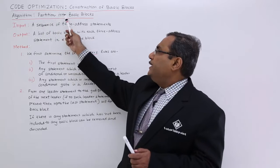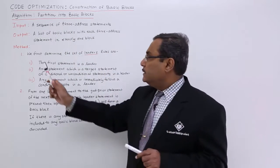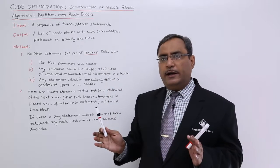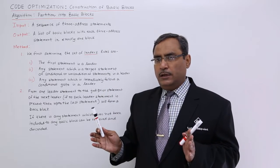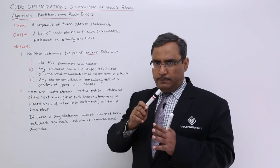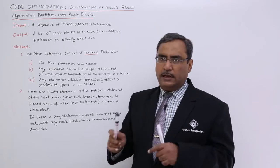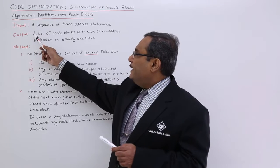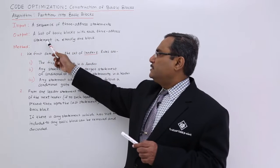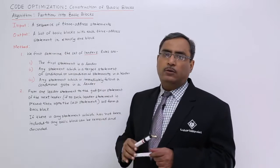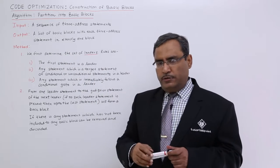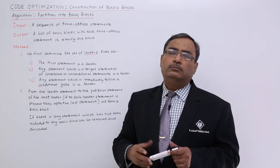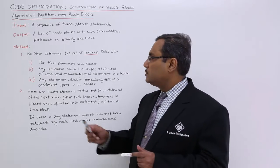The algorithm partition into basic blocks takes as input a sequence of three address statements. Initially, a high-level language program is given to the compiler, and then the compiler generates the three address code against the respective high-level language statements. The output is a list of basic blocks, with each three address statement in exactly one block. The full three address statement list will be divided into one or more multiple basic blocks.